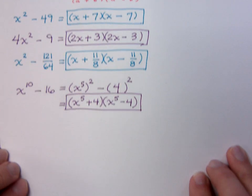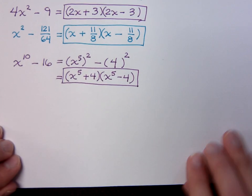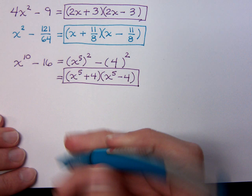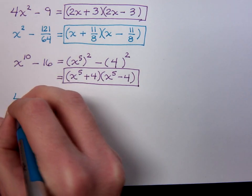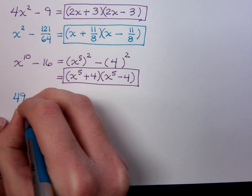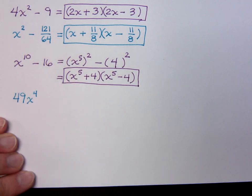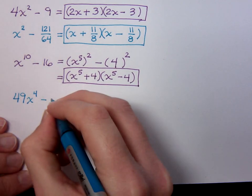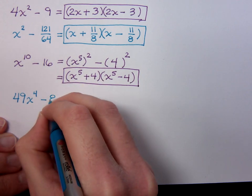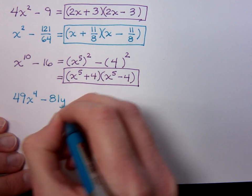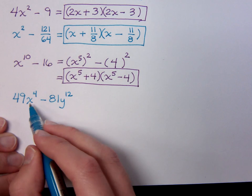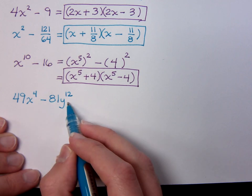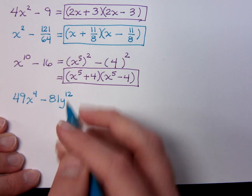Alright, well, let's make things even more exciting. How about we try this: 49x^4 - 81y^12. Well, we see that 49 and 81 are both squares. And to see if the variable components are squares, you just have to make sure their exponents are even. And they are.